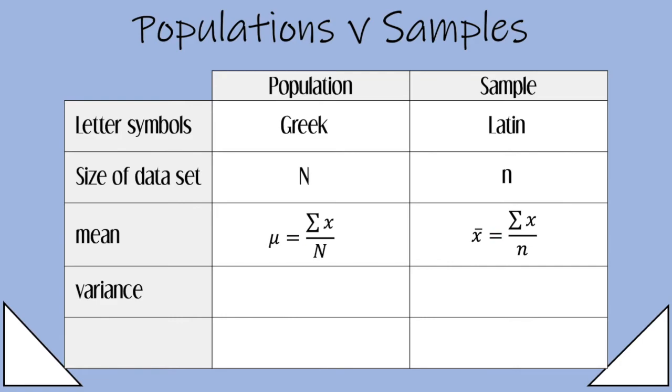Now on to variance. For the population, the variance is called sigma squared. And here's the formula that we've worked with before. For the sample, the variance is called s squared. And this time, there is a difference in the formula.